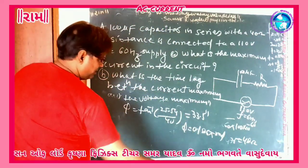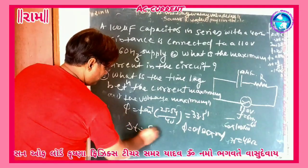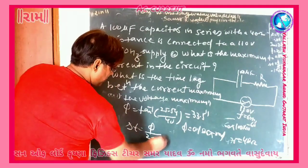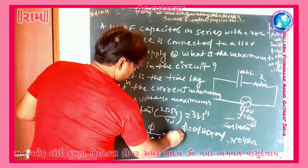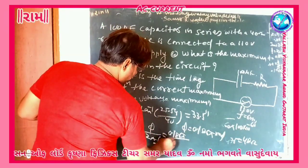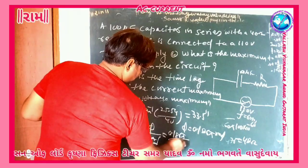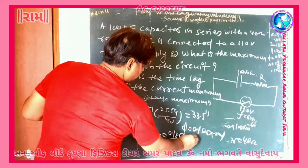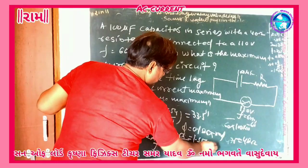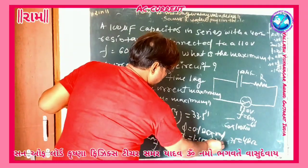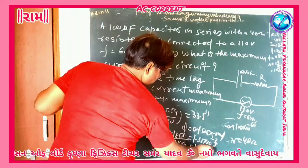Now let us find the time delay delta T. Delta T is equal to phi upon 2 pi f. Keeping phi = 0.186 pi, upon 2 pi times f = 60, we get delta T = 1.55 times 10 to the power minus 3 seconds, or 1.55 milliseconds.